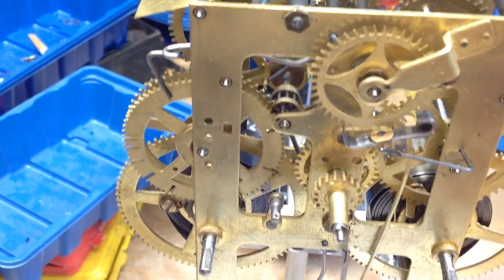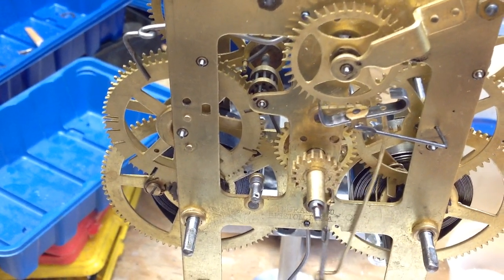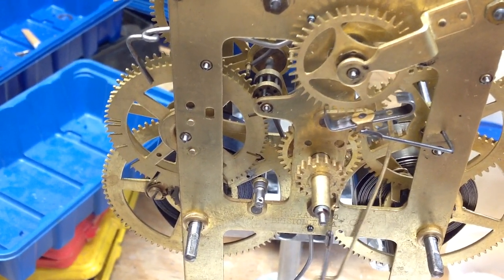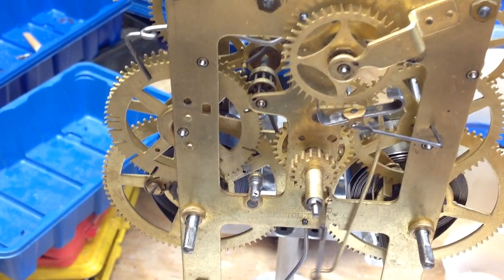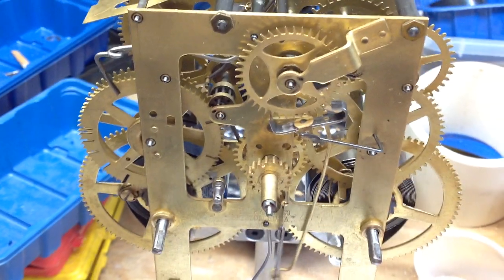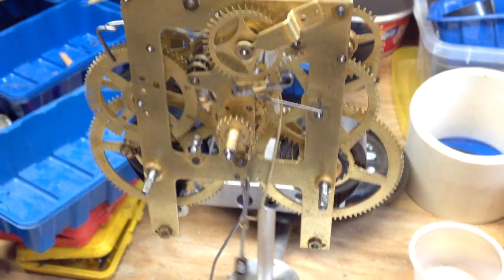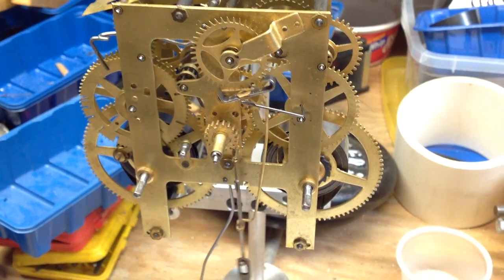So that causes the strike to unlock and it'll strike and you keep doing that repeatedly until you get it to strike 12. Now you've got the number of strikes to correspond with midnight which is when the calendar flips over and so that's how it works.